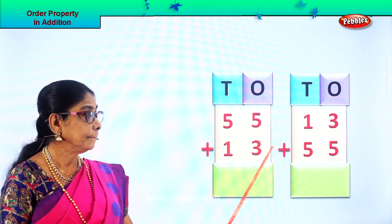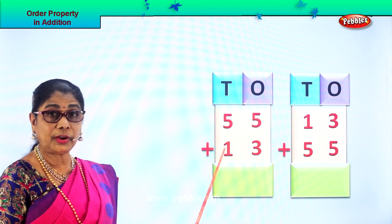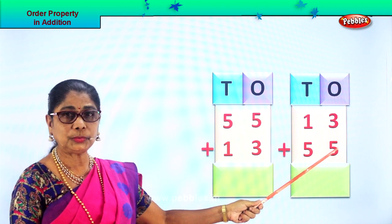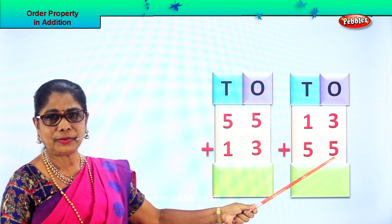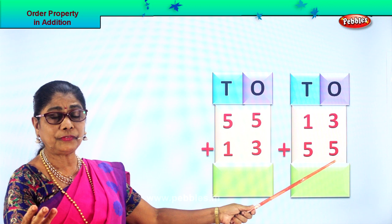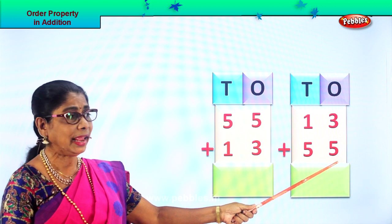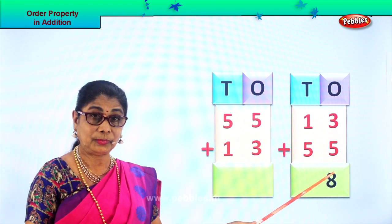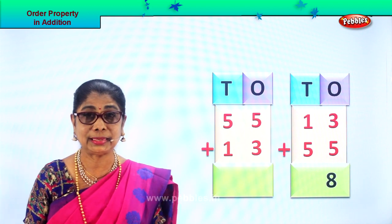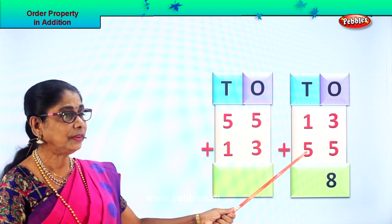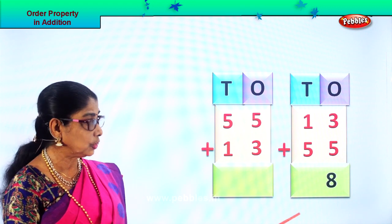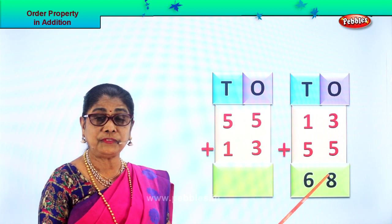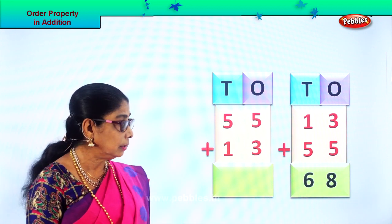You are asked to add 13 plus 55 or 55 plus 13. Let's arrange them in ones and tens and add the ones place first. 3 ones plus 5 ones — 5 in the mind, take 3 on your fingers. After 5: 6, 7, 8 ones. Then the tens: 5 tens plus 1 ten is 6 tens. So you put down 6 in the tens place. 13 plus 55 gives you the answer 68.